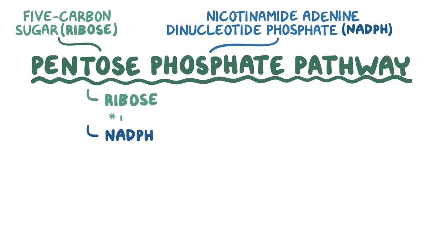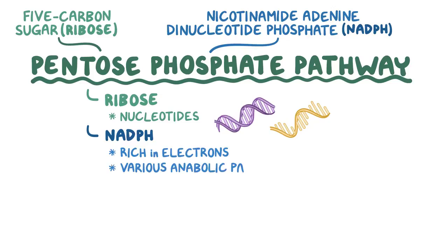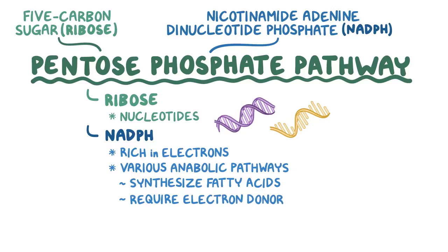Ribose can be used to make nucleotides, which are the building blocks of our DNA and RNA. And NADPH is rich in electrons and can be used in various anabolic pathways. Anabolic pathways are the ones that synthesize molecules like fatty acids from scratch and require an electron donor, like NADPH.